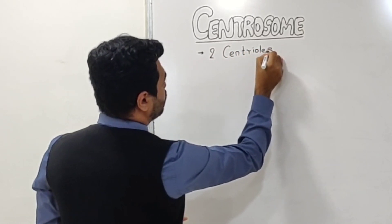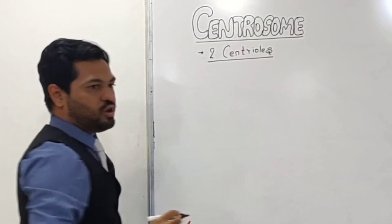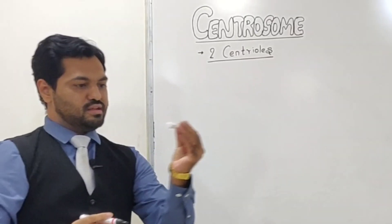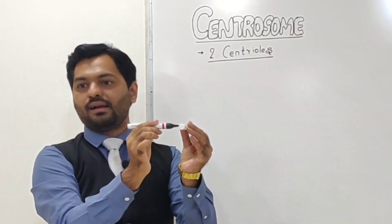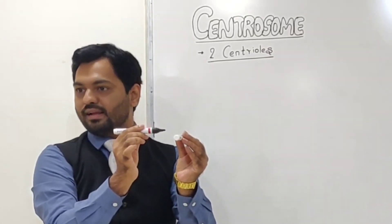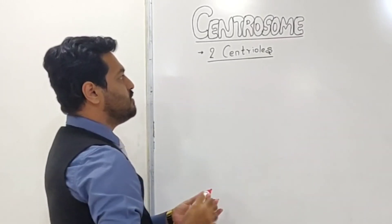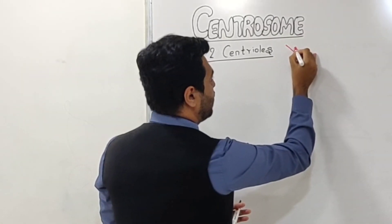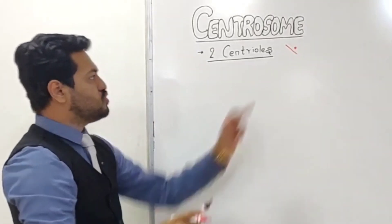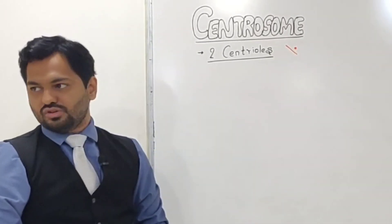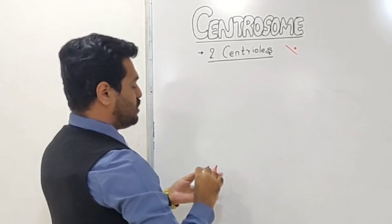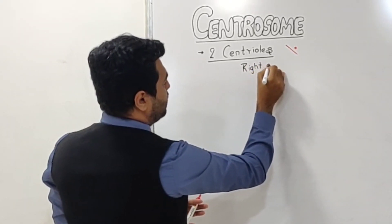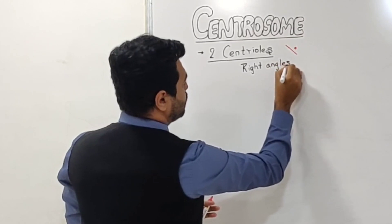The centrosome is made up of two centrioles, and both these centrioles are like cylinders. One cylinder goes inward while the other is at right angles to it. Since both centrioles are at right angles to each other, in the cell division chapter we represent them as a slash and a dot. So that is the representation of both centrioles arranged at right angles to each other.